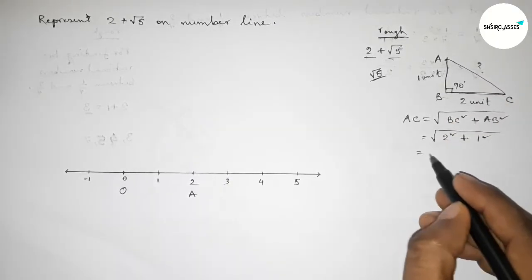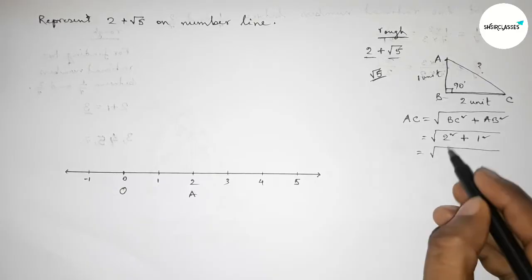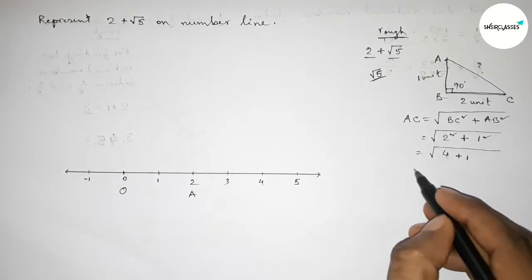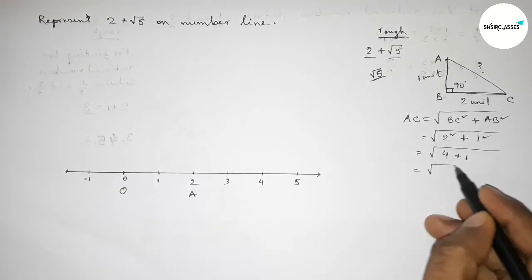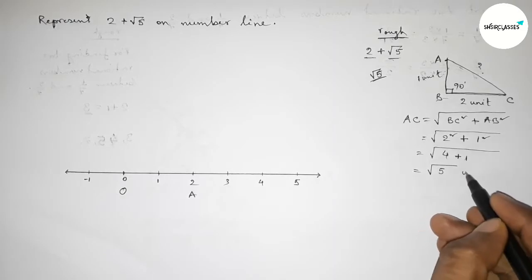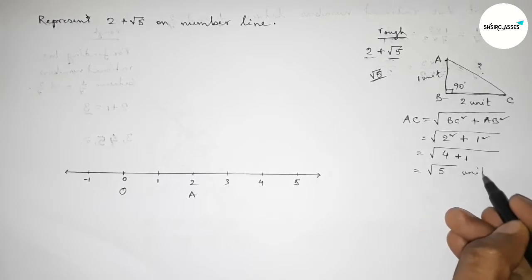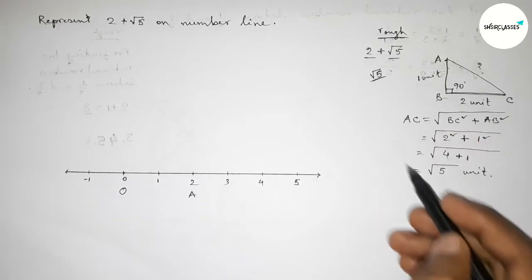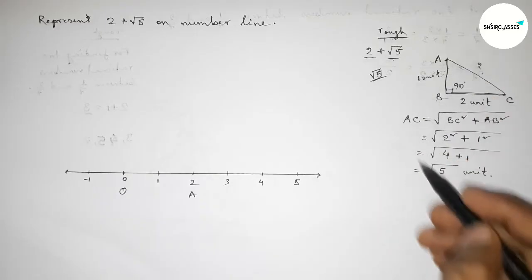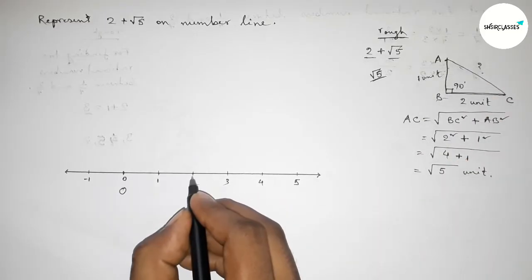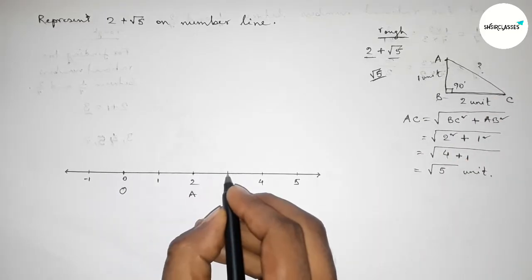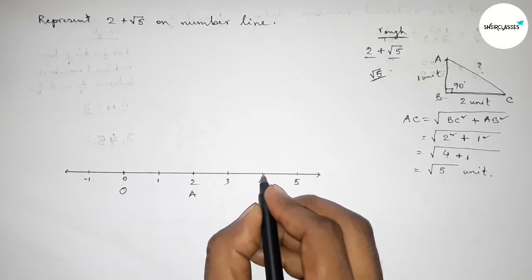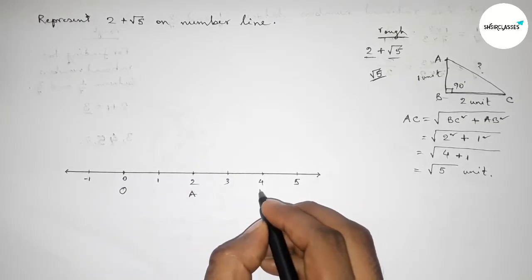So AC equals root over 2 squared plus 1 squared, which is root over 4 plus 1, which equals root 5 units. Now I'm going to apply this concept between points 2 to 4 on the number line.